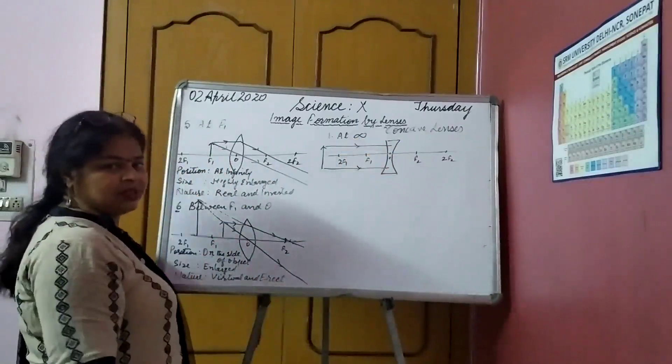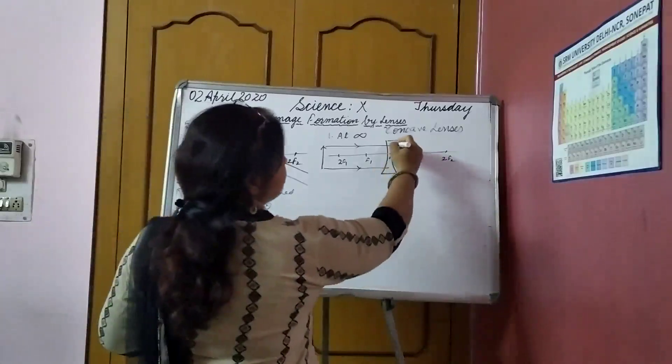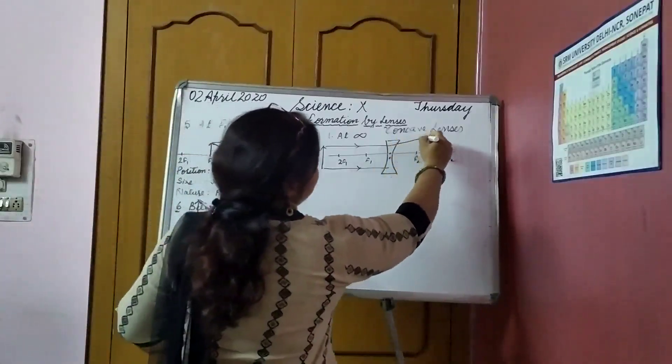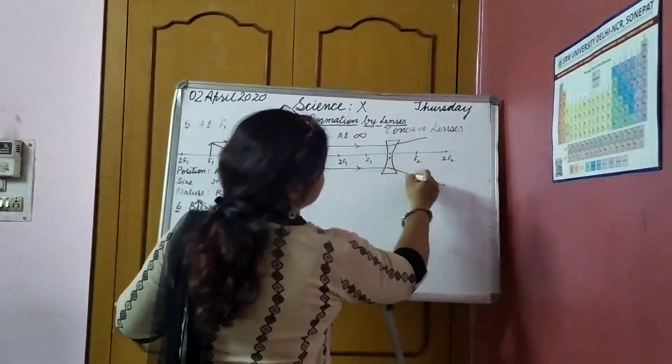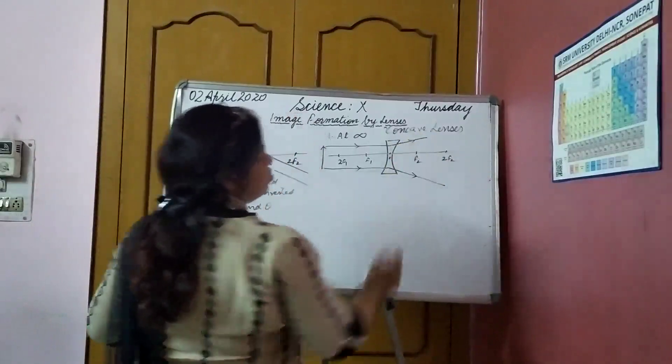These are diverging lenses. If you remember, we discussed last. So here, the refraction will take place. They are going to move away.